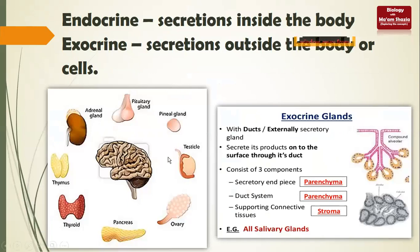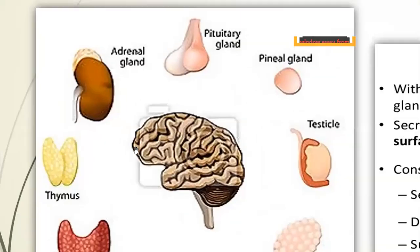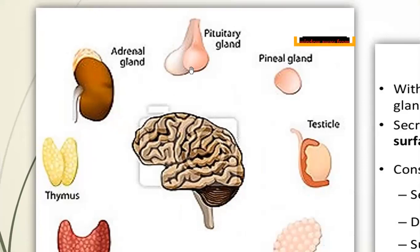Now let's look at examples of exocrine and endocrine glands. Starting with the kidney - it has a yellow-colored cap, which is the adrenal gland. The pituitary gland is present in the brain. There are also testicles - which are basically the testes - and ovaries, which are gonads. Testes are in males and ovaries in females - both produce secretions.